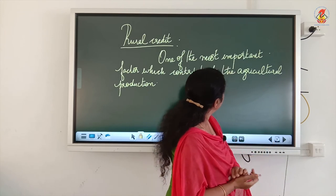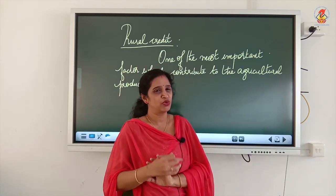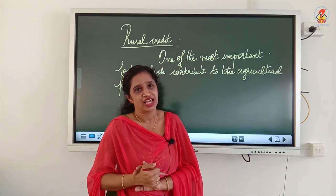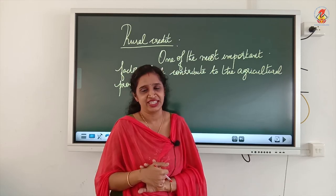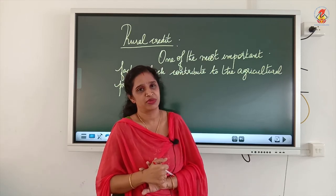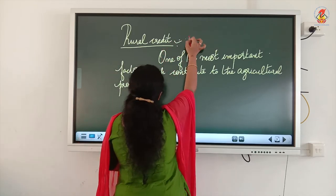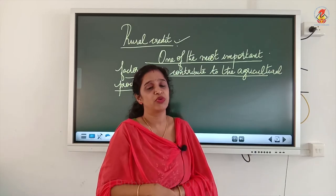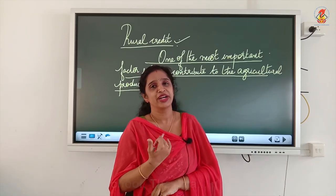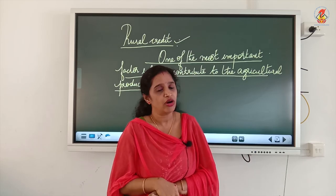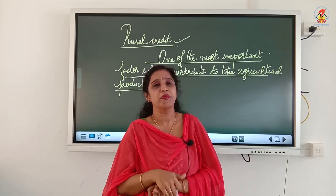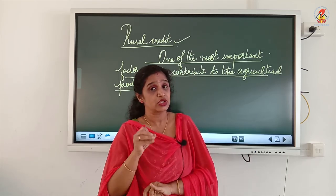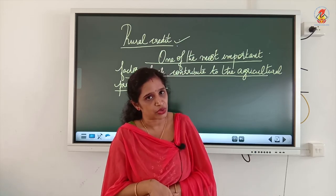Now we will move to the next point: rural credit — the most important aspect with regard to agricultural activity, especially for rural farmers. Rural credit is one of the most important factors contributing to agricultural production. Most farmers will not have money to spend initially on agriculture, so they need money from different sources. Sources of rural credit is our next topic.